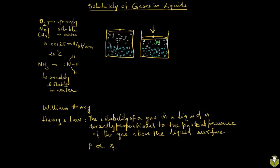This is the partial pressure of the gas in the vapor phase and this is the mole fraction of the gas as a solute in the liquid phase. Replacing the proportionality sign with the constant, P is equal to K_H, which is called the Henry's constant, times X.